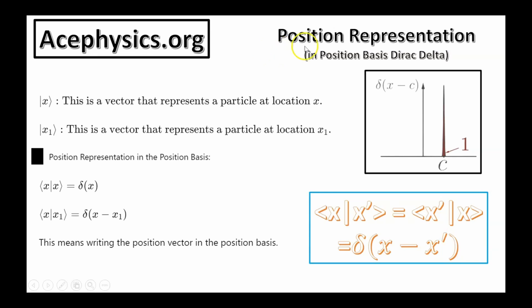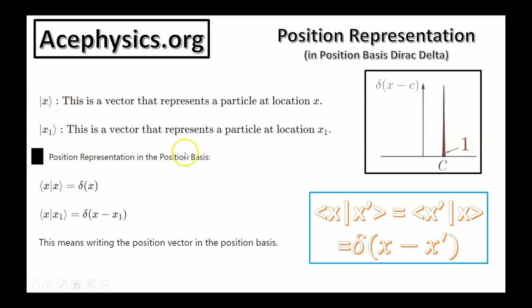Let's discuss the position representation in the position basis, which is the Dirac delta function. Ket x is a vector that represents a particle at location x. Likewise, ket x1 is a vector that represents a particle at location x1. These vectors can be represented in different bases, and one of the bases they can be represented in is the position basis.